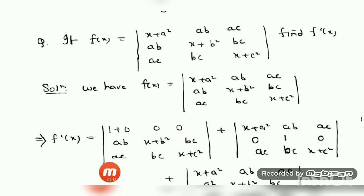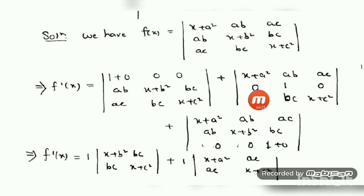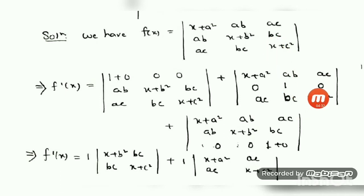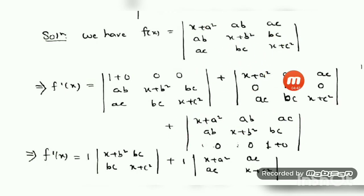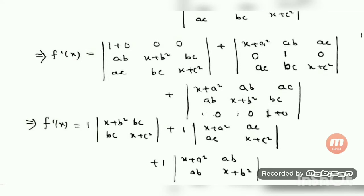After this, keep the first row and third row as it is, and differentiate the second row. The derivative of a·b is 0; d/dx of (x + b²) is 1; d/dx of b·c is 0. Keep the third row as it is. Plus, since it is a third-order determinant, one more term: keep the first and second rows as it is, and take the derivative of the third row. d/dx of a·c is 0, d/dx of b·c is 0, and d/dx of (x + c²) is 1.